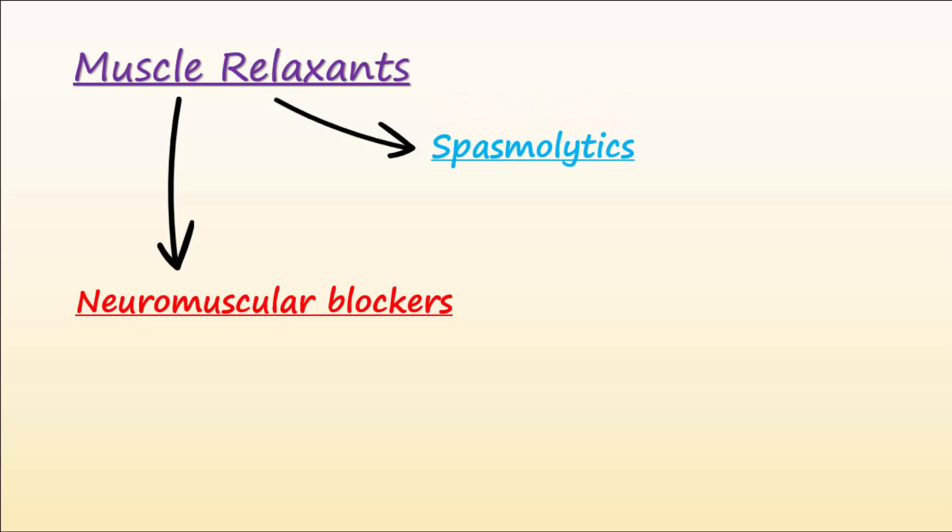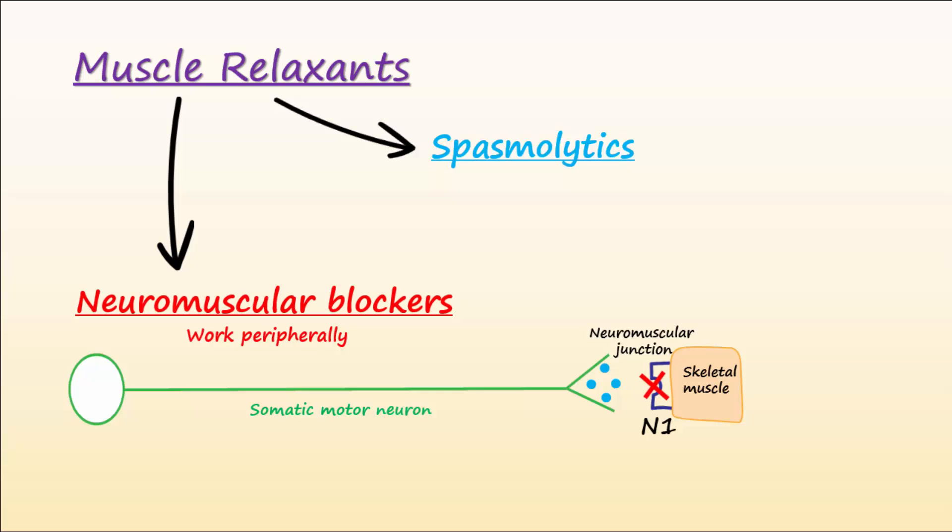Neuromuscular blockers work in the periphery. They block nicotinic I receptors in the neuromuscular junction to stop skeletal muscle contractions.